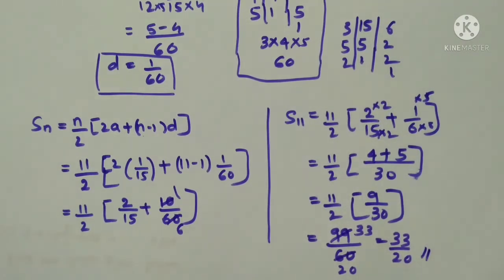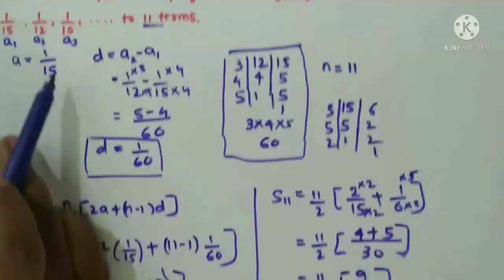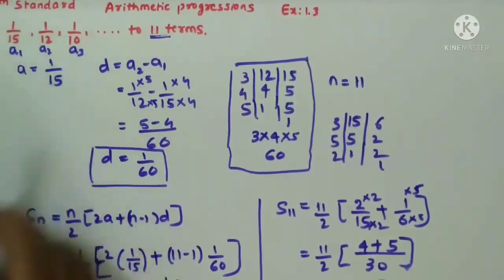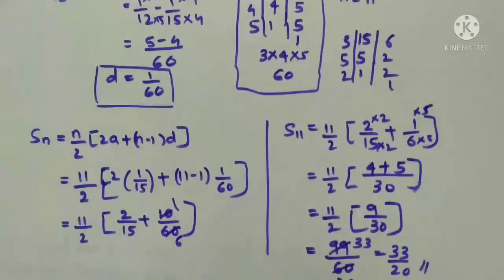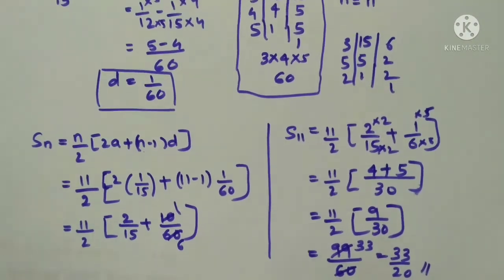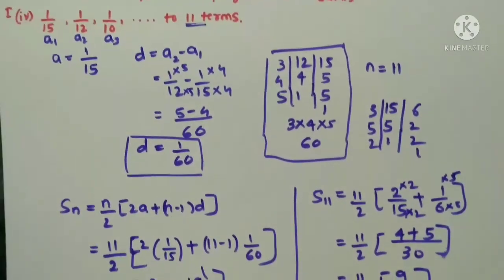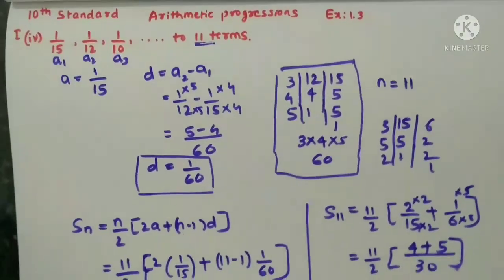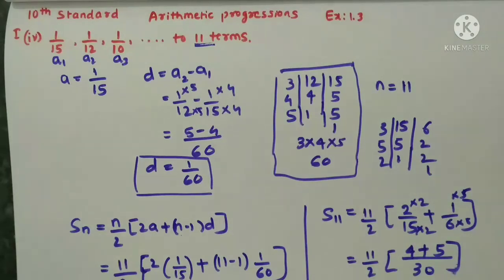Sum of the 11 terms also we got in the fraction only. Here all are there in the fraction only, so answer also we got in the fraction only. The answer is 33 by 20, sum of the 11 terms is 33 by 20. I hope all of you understood. This is the 4th sum of the exercise 1.3 first main.